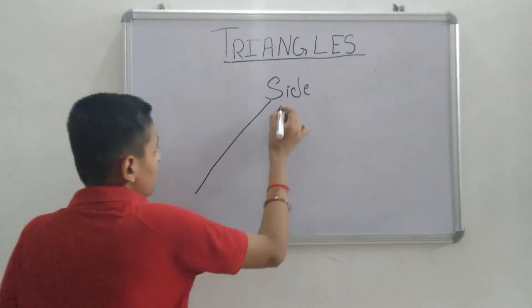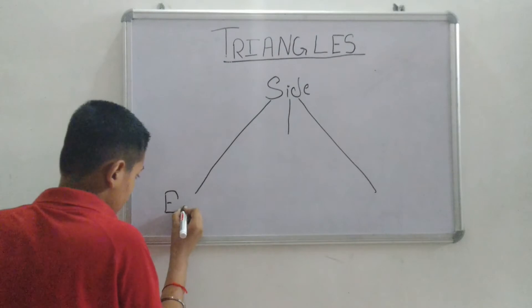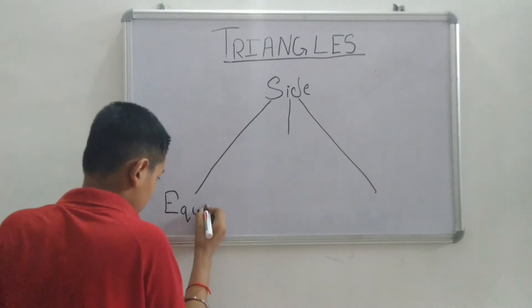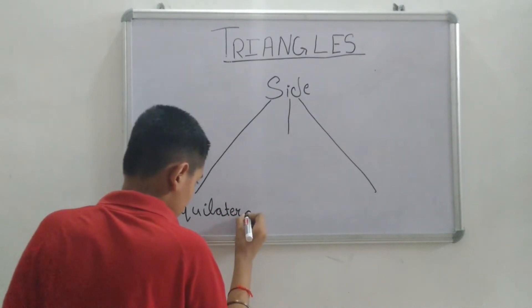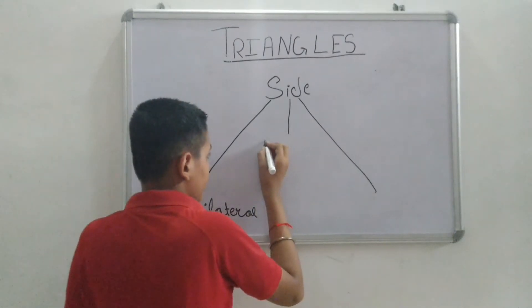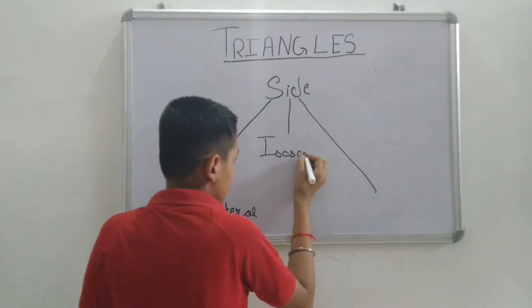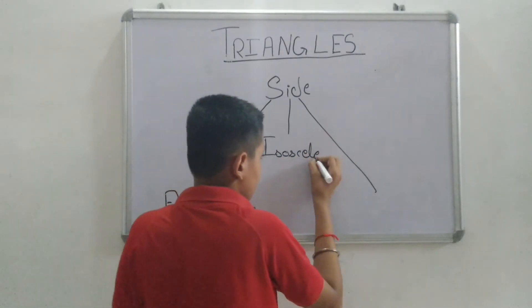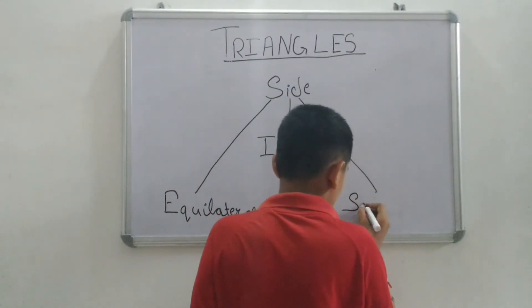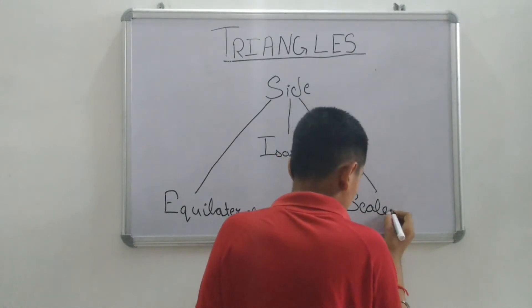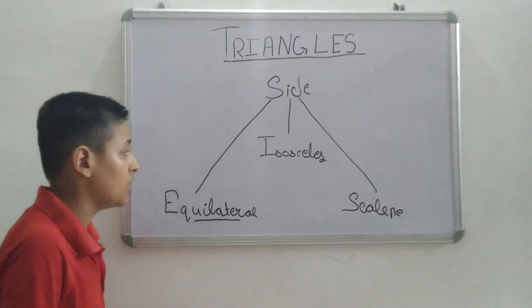On the basis of sides, it is divided into three types. First type: equilateral. Second type: isosceles. And third, scalene.